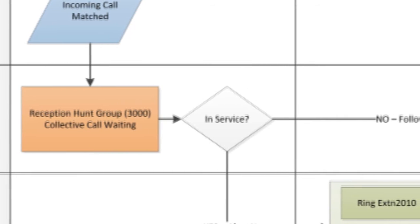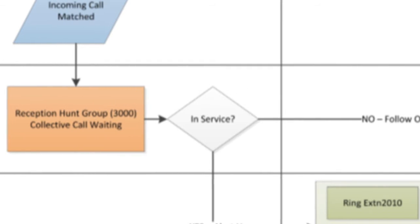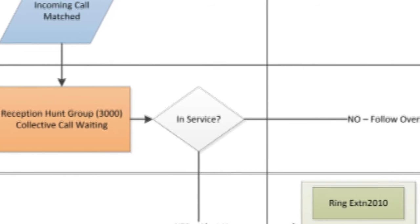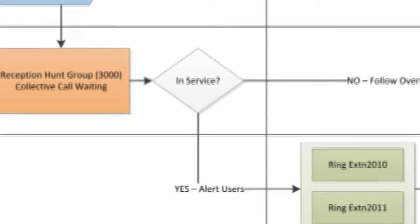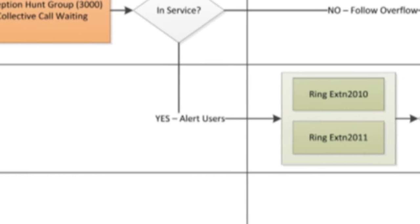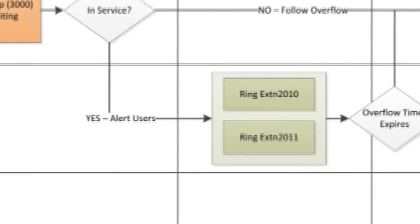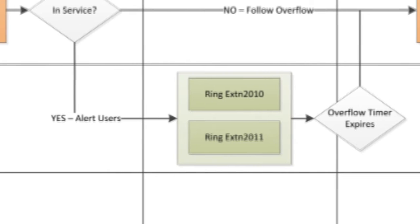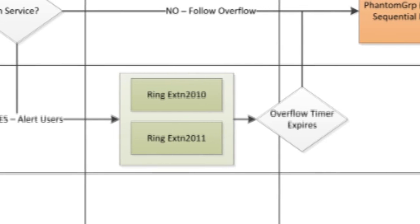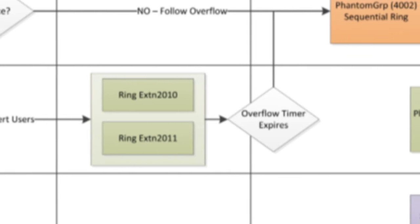Our extension for the hunt group will be 3,000, and it's a collective call waiting group — pretty common for a receptionist-type scenario. We're going to check to see if that group is in service. If it is, we're going to ring a few extensions for 45 seconds in this example. It could be multiple extensions, more or less time — that's up to you.